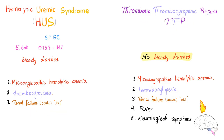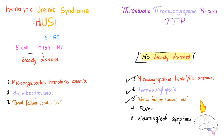TTP is related to a defect in the ADAMTS13 enzyme. There is no bloody diarrhea because it's not related to E. coli O157:H7. However, we still have microangiopathic hemolytic anemia, thrombocytopenia, acute renal failure, plus two unique features: fever and neurological symptoms.